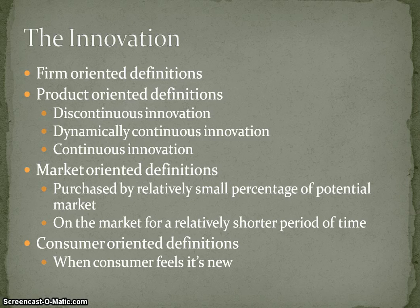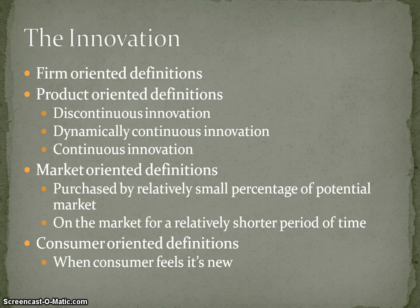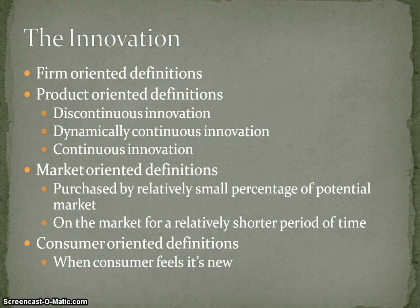Innovation is defined in different ways and does not have a very consistent definition. But there are four definition categories. The first is called firm-oriented definitions — if a company perceives or feels it is a new product for them. For example, if Apple releases another iMac, that is a new product for them. If a brand like Synthol releases a Synthol Duo or Synthol New, that is their firm's new product. It is the firm that decides on the innovation — if they feel it is new in their organization, it can be called innovation.